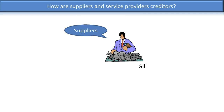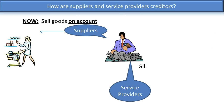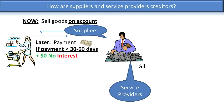How are suppliers and service providers creditors? Gill will represent suppliers and service providers. Gill provides goods and services to customers on account — he first provides goods or services and then waits to be paid later. As long as Gill's customers pay him within a reasonably short period of time, usually within 30 to 60 days, Gill will not charge them any interest. Creditors like Gill often choose to sell on account because many customers are unable to pay cash upfront but can pay later if given sufficient time.